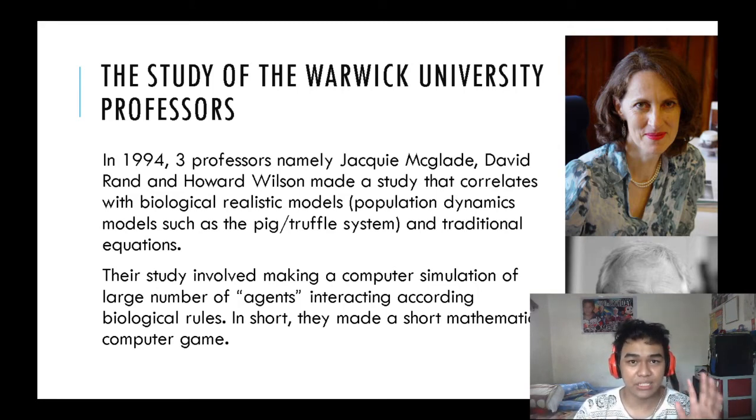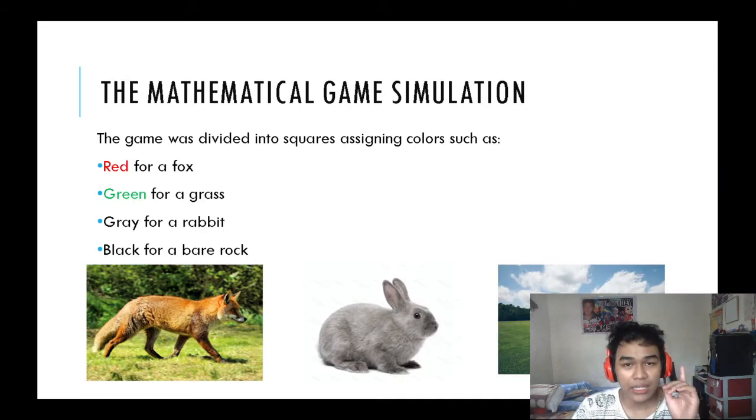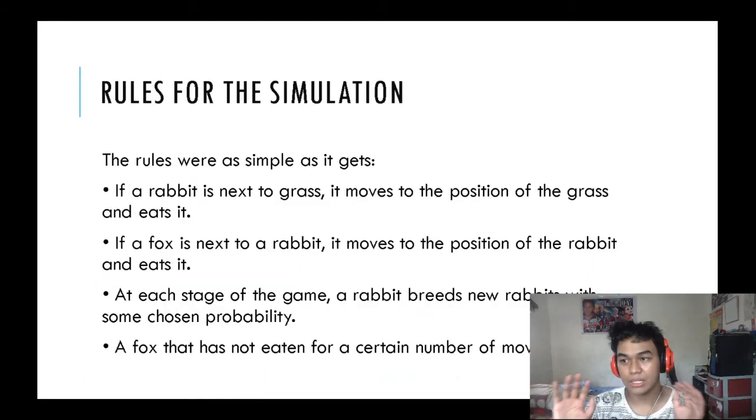They have rule sets on how to do it. The game simulation is represented with red, green, and gray. Disregard the black because that's just a placeholder. The red means a fox, the green means grass, and the gray means a rabbit. So according to what they made, they programmed something in a game.